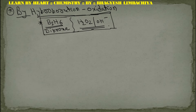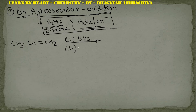This reaction is of alkyne to give the alcohol. If we have propene, in the first step we use B2H6, giving BH3, and in the second step H2O2 with OH-.